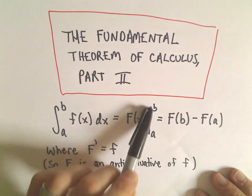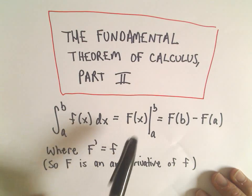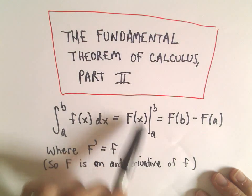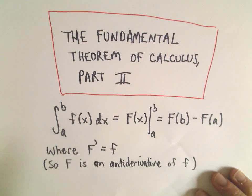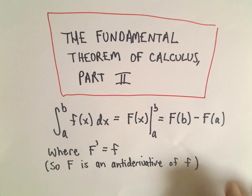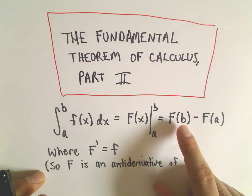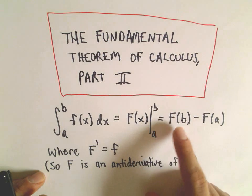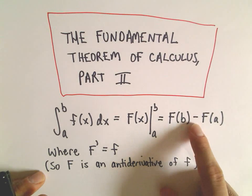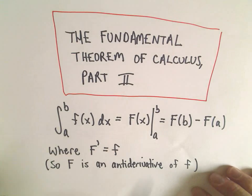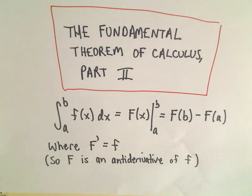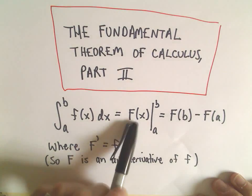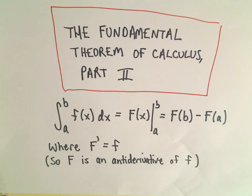And then a lot of times we'll just make a little bar here, that's the notation kind of saying we've found an antiderivative. We still have to evaluate that from a to b, and to evaluate this, what we do is we calculate F of b minus F of a. So we take the upper limit of integration and subtract away what's called the lower limit of integration. So again, all this condition says is that capital F is an antiderivative.